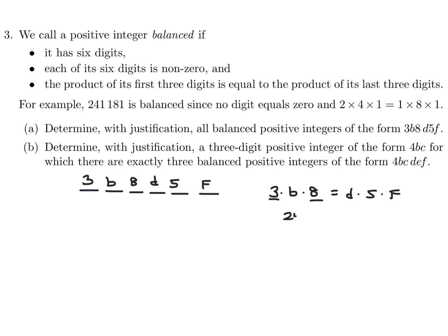We have six digits and we've got 3B8D5F. So to meet the definition, 3 times B times 8 would have to equal D times 5 times F. Okay? Well, this 3 and this 8, that combines to 24. So 24B would have to equal D times 5 times F. Now, 24 and 5 don't mix. Like, 24 is not a multiple of 5. So the only way that this could be valid is if B is equal to 5. Yeah, that's the only way.